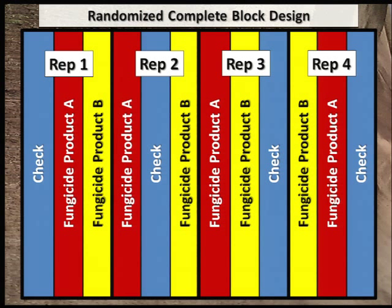This is a field layout for comparing two or more treatments in replicated blocks. For this design, four blocks are the minimum number of reps needed, and five is better if you have enough land area. Each block contains all treatments, with randomized assignment of treatments to strips within each block — easily done with the flip of a coin. Strips within blocks should represent similar soil and other conditions, but conditions from one block to another can vary.